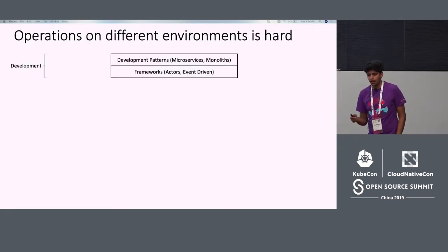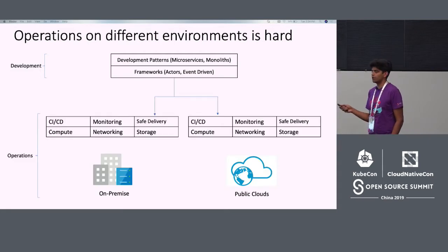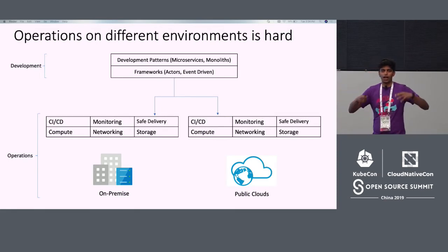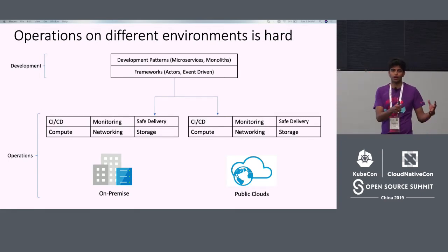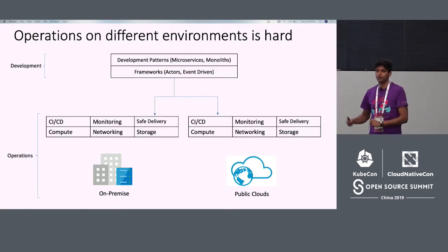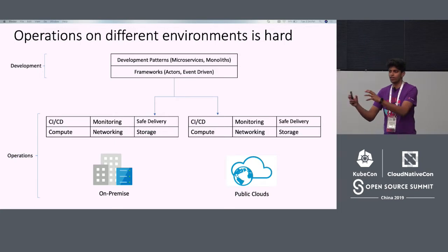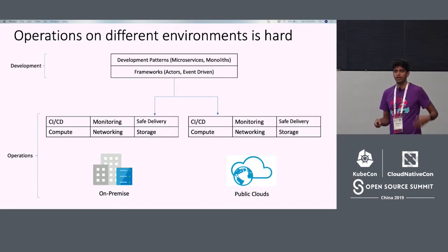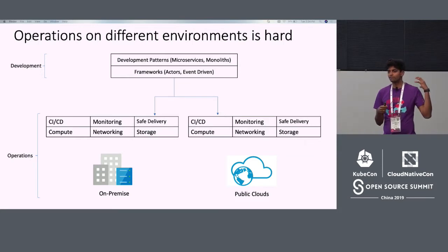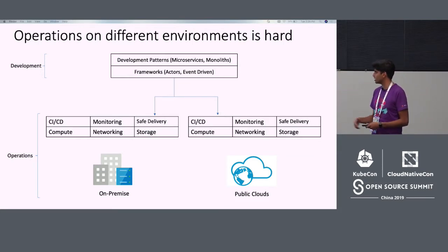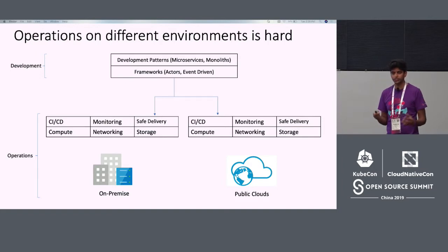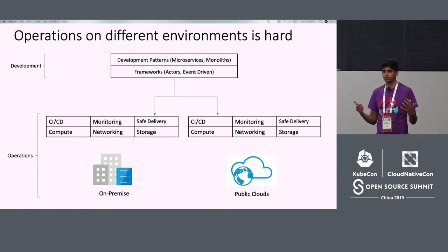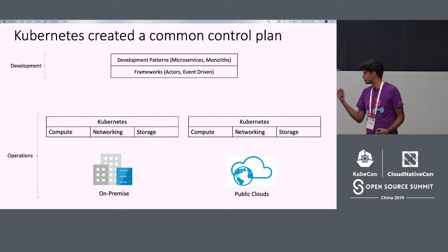One of the challenges with operations has always been operating across different environments. With the dawn of public cloud, you have compute, networking, and storage happening in two different places — a completely separate stack on-prem, and in public cloud certain things are managed for you, like virtual networks and VM availability. But typically when operators are building out tool chains such as CI/CD, monitoring, and safe delivery pipelines, they have to duplicate this. When you have an on-premise setup and a public cloud setup, large enterprises are forced to build separate sets of tools to actually manage things.